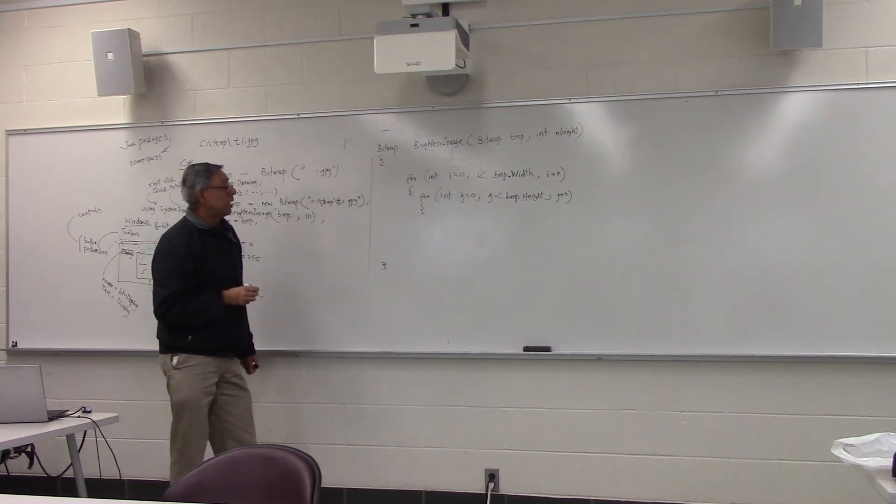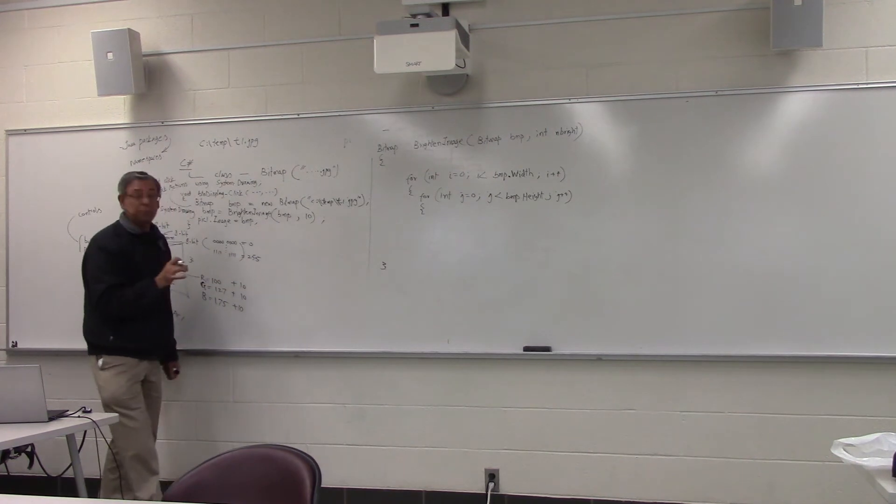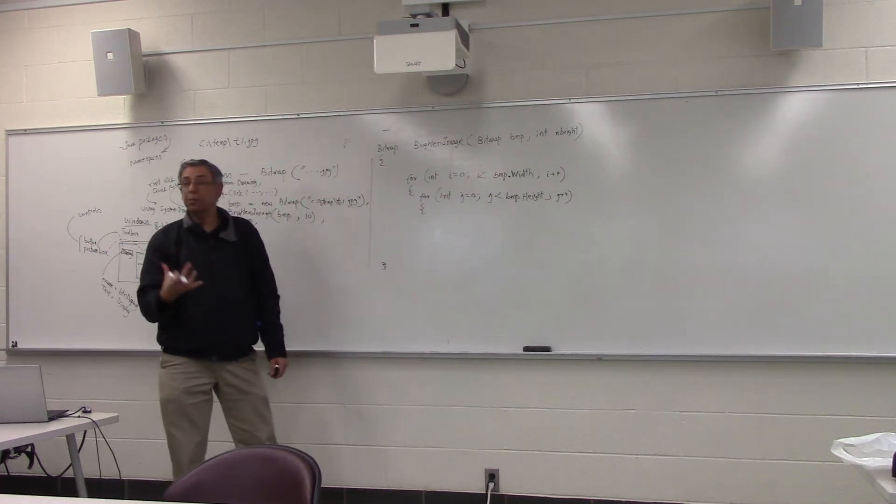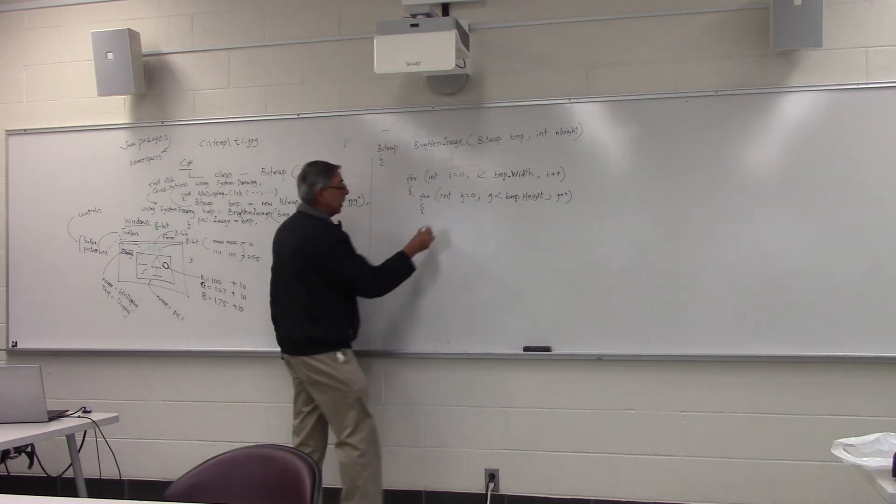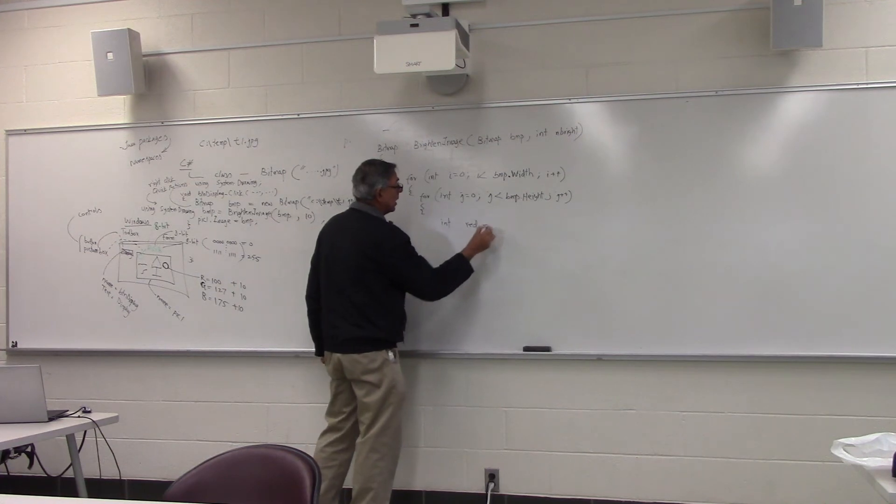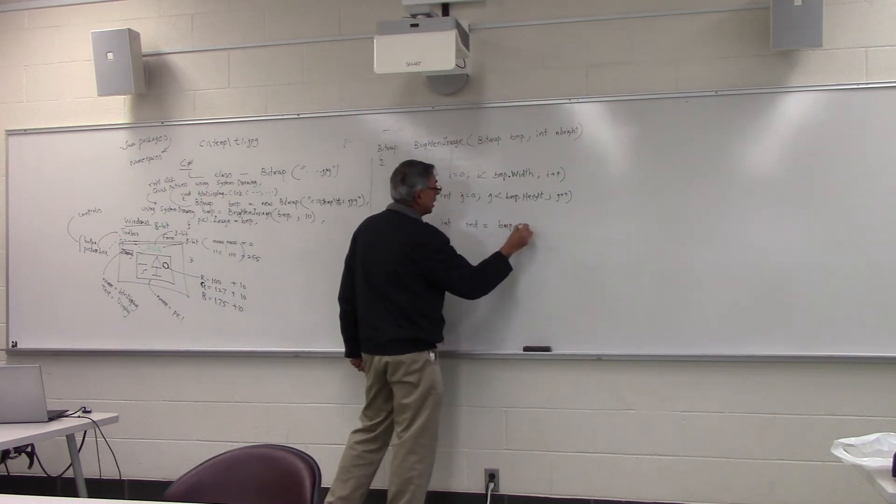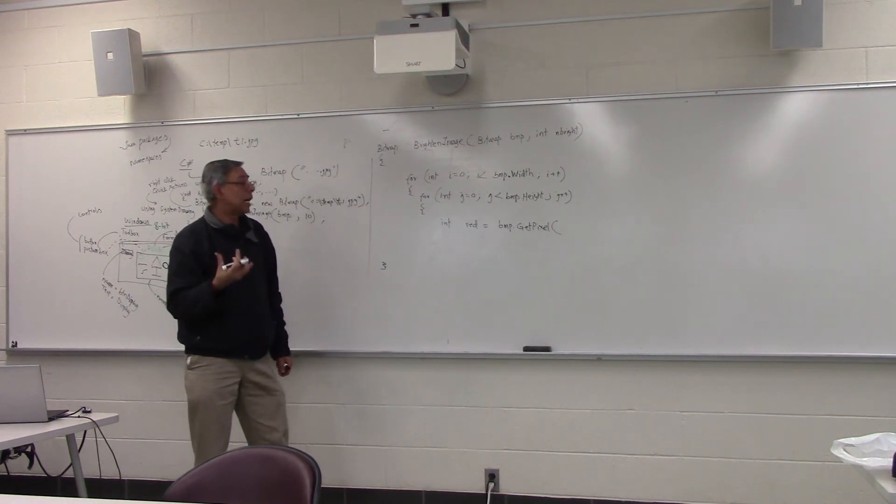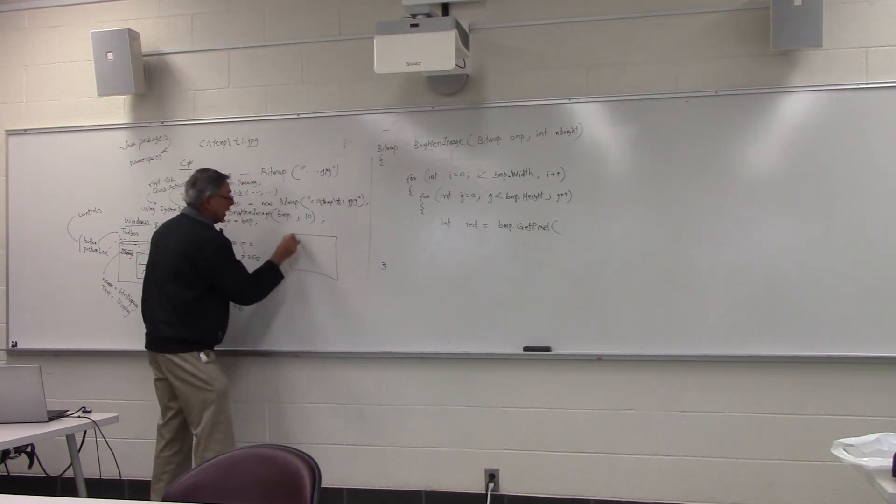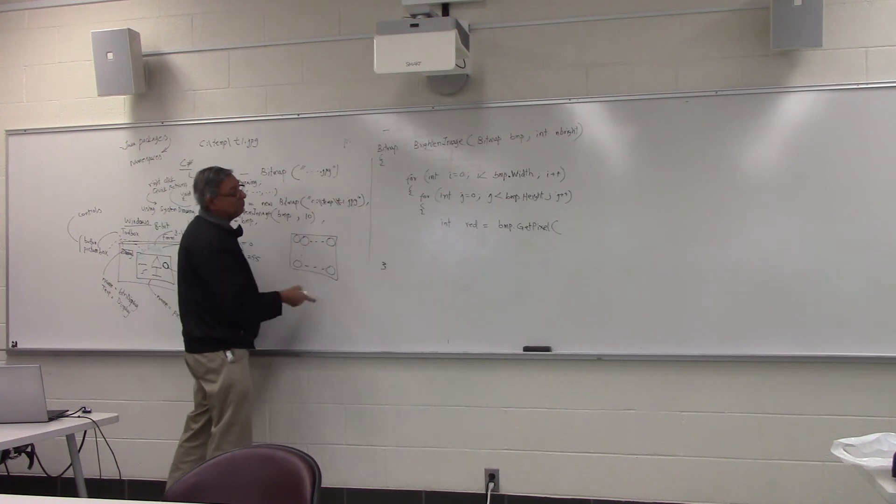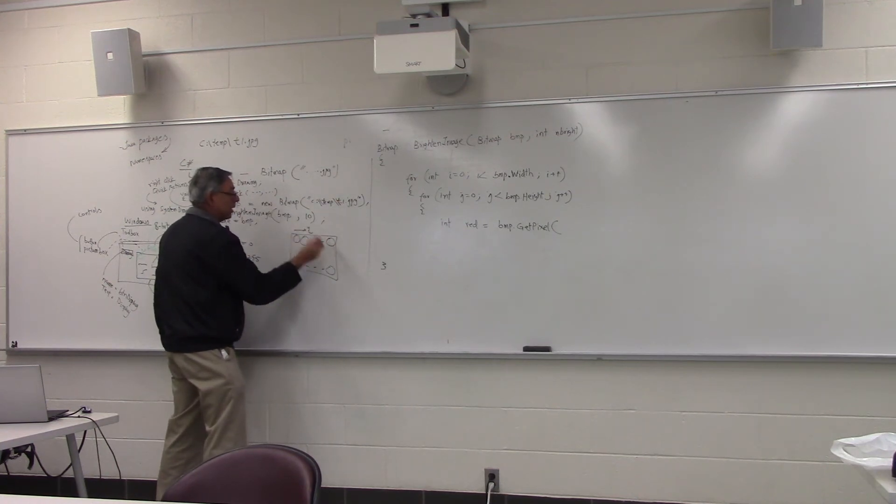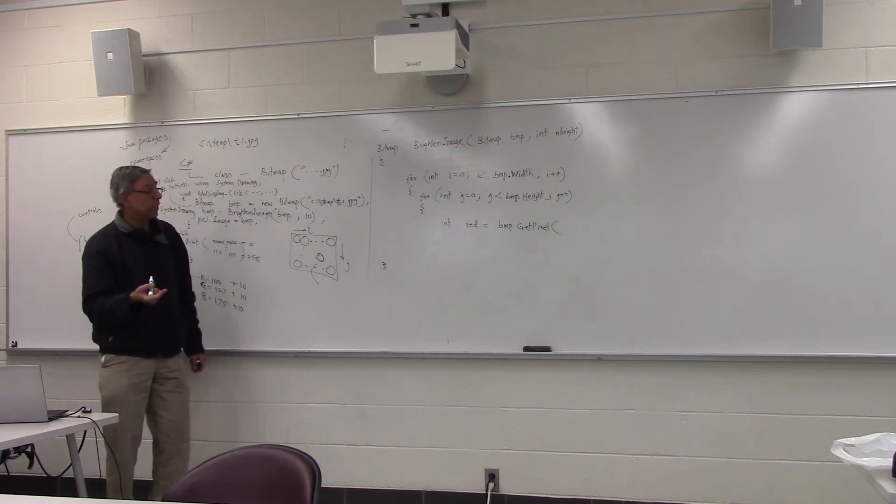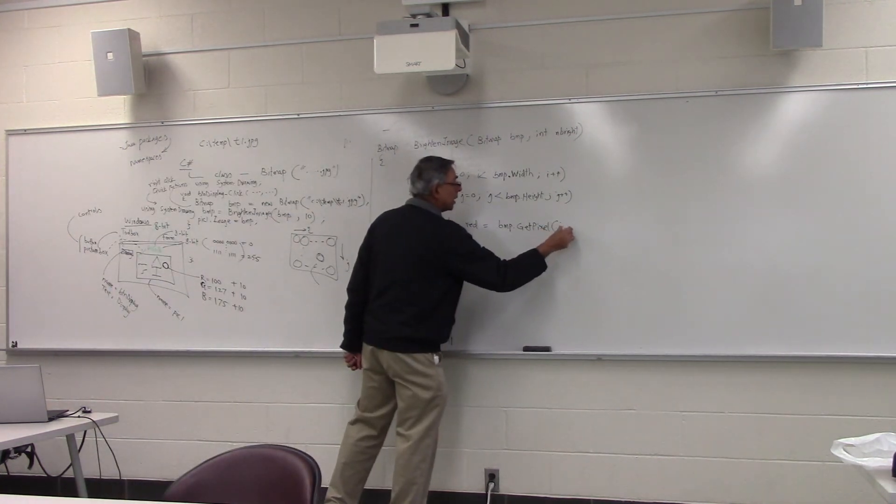First thing we need to do is find out what is the red component of each pixel at position i, j. What is the green component? What's the blue component? Your typical code will go something like this. Int red equal to bmp dot get pixel. It has two parameters, i, j position. My i variable is going width wise. My j variable is going height wise. At any pixel, there's a certain i value, certain j value. I can say i comma j. What it does, it gives me the whole pixel.